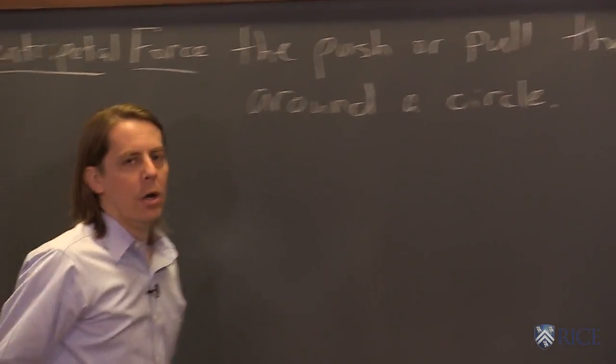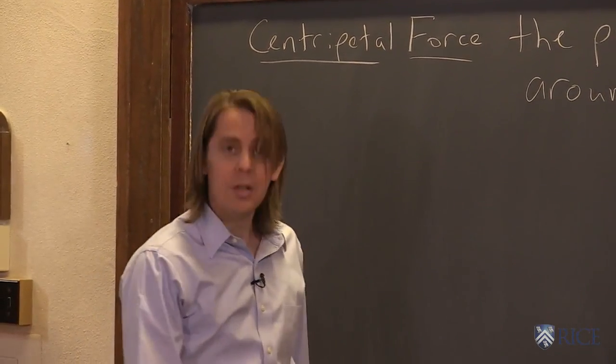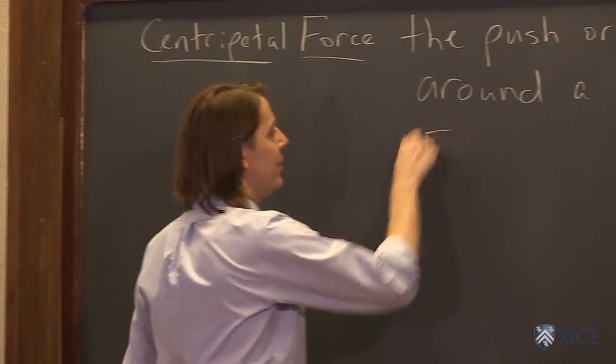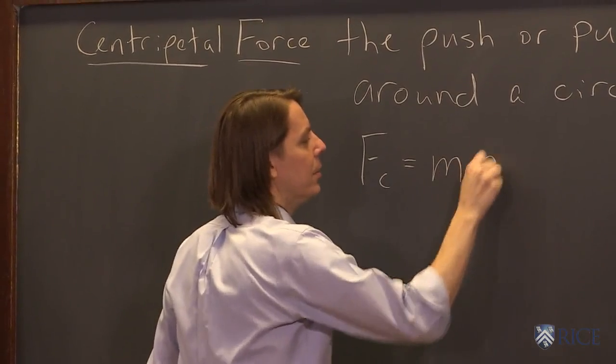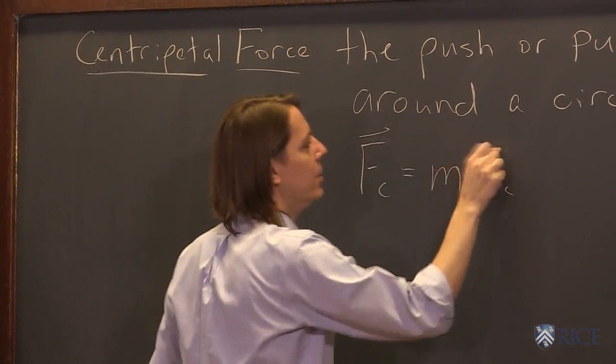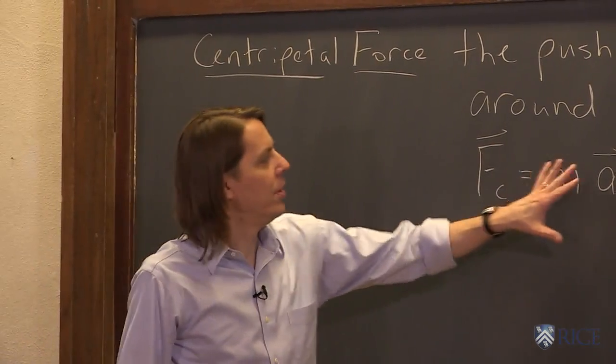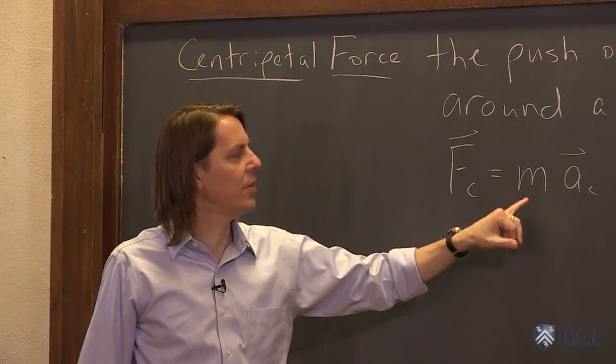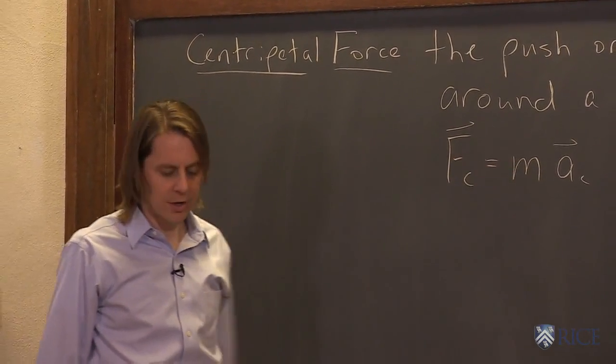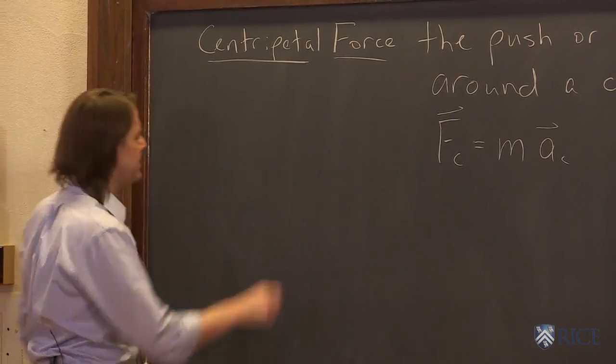Well, since we've already done the centripetal acceleration, there really isn't much to it. It's simply that the centripetal force equals ma—the mass times the centripetal acceleration. And since we have this simple relationship, they must be in the same direction. This vector is a scalar constant times that vector, then the centripetal force is also center-seeking. It also points inside the circle.